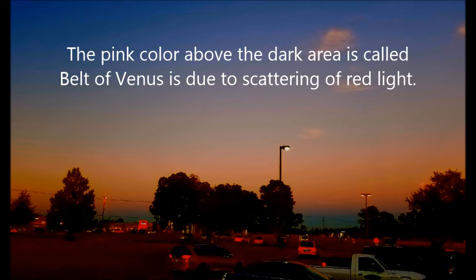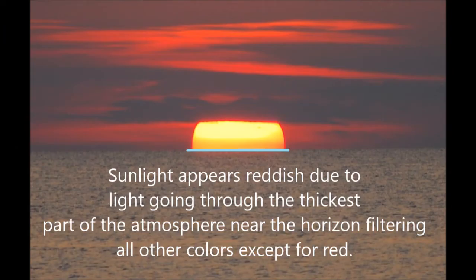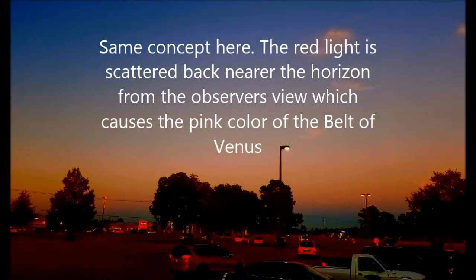It is due to a scattering of red light. Sunlight appears reddish due to light going through the thickest part of the atmosphere near the horizon, filtering out all the other colors except for red. Same concept here — the red light is scattered back nearer the horizon from the observer's view, which causes the pink color of the belt of Venus.